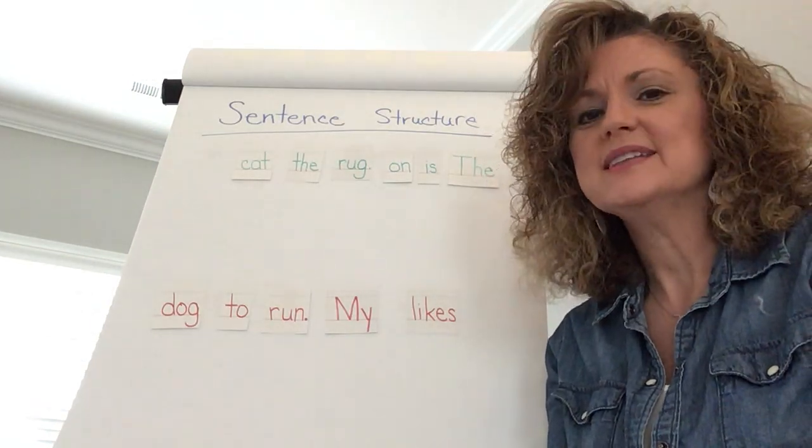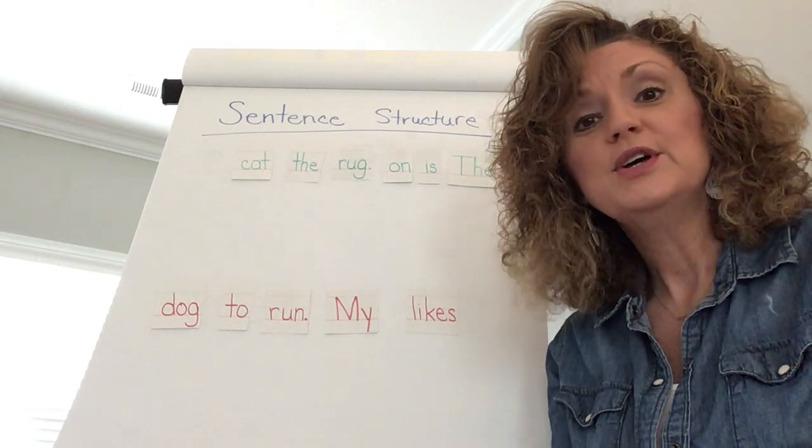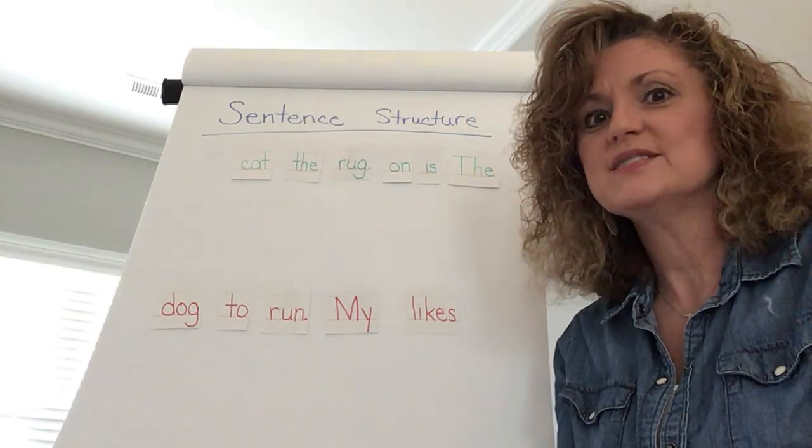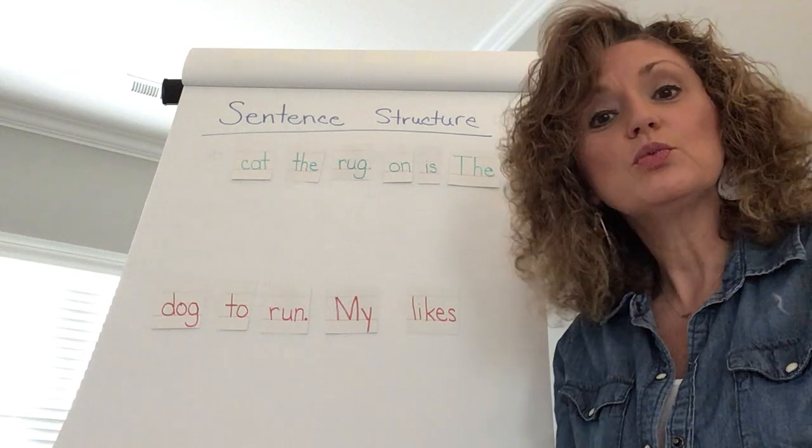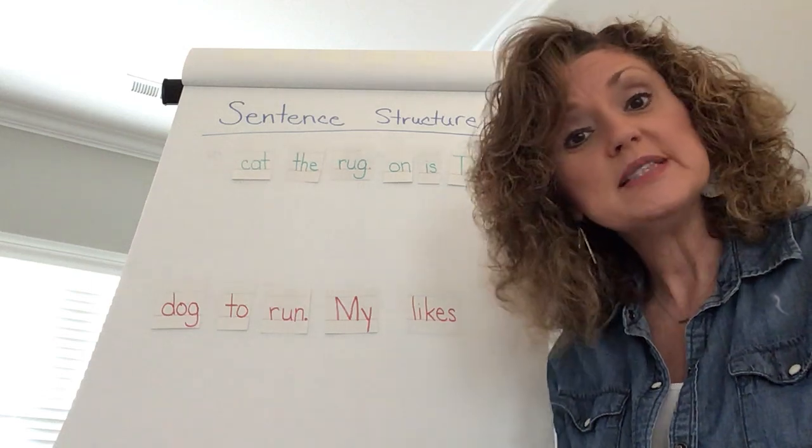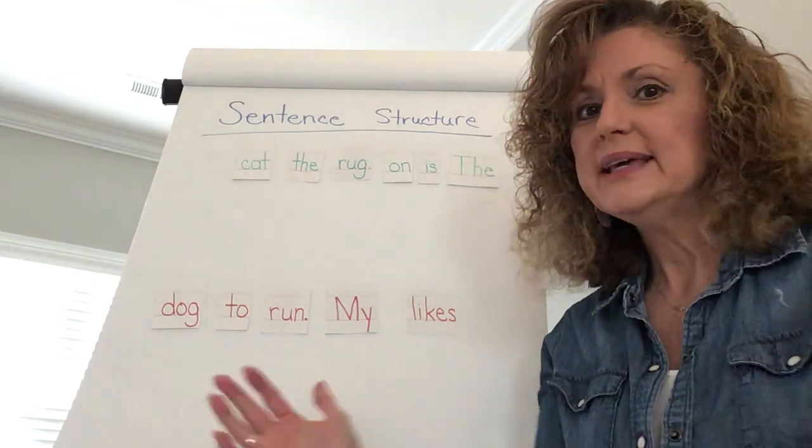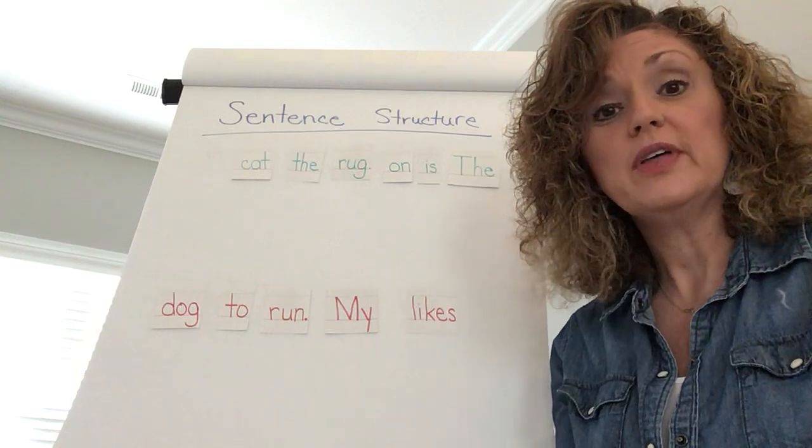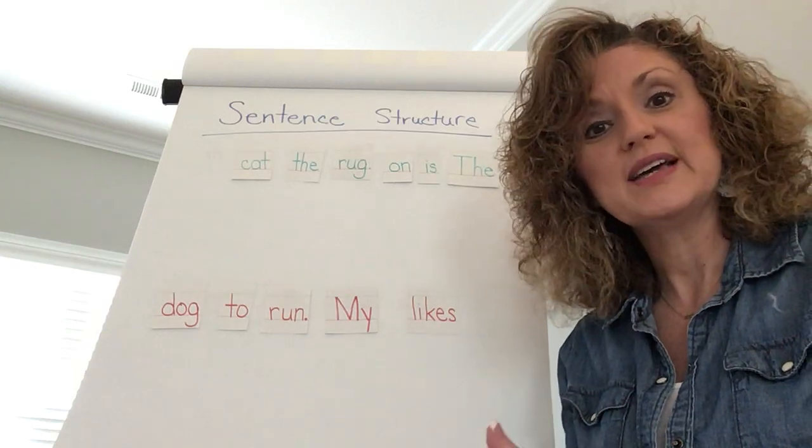One rule is a sentence always has to start with a capital letter. So the first word of the sentence must start with a capital letter. Then a good writer knows that they need to have spaces between their words. So not a big gap but a space so we know that the first word has stopped and the next word is started.